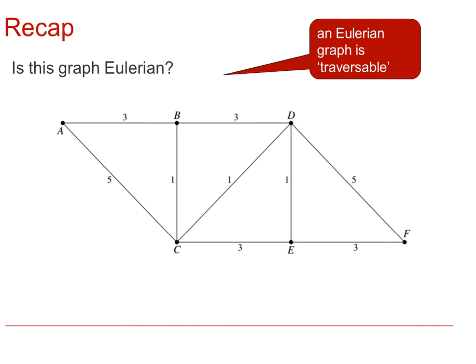You can also tell if a graph is Eulerian without drawing it by inspecting the degree or order of the vertices or nodes. Here we have that A is of order 2, B of order 3, C of order 4, D of order 4, E of order 3, and F of order 2.